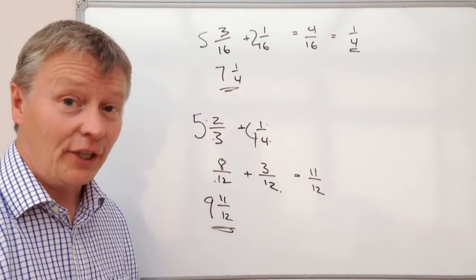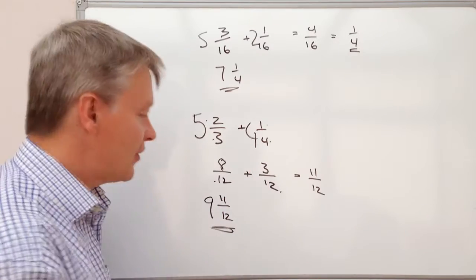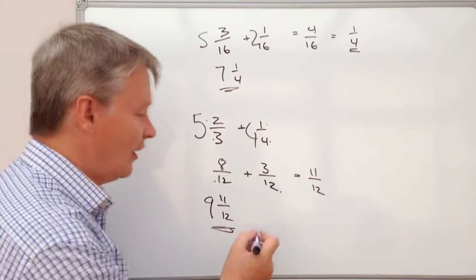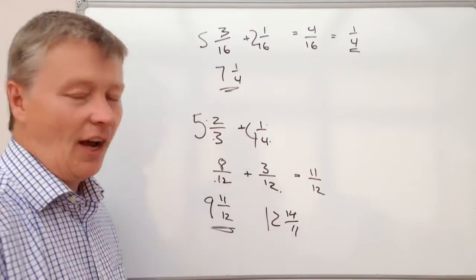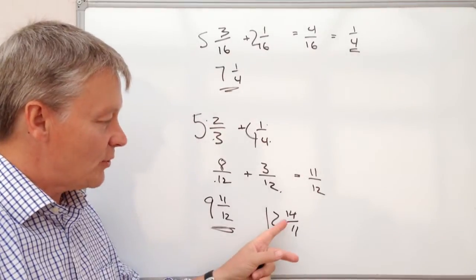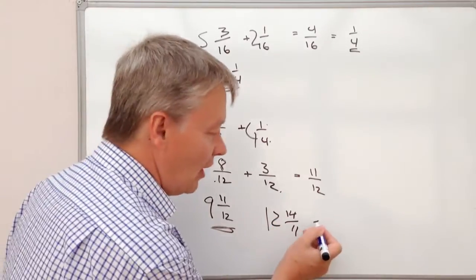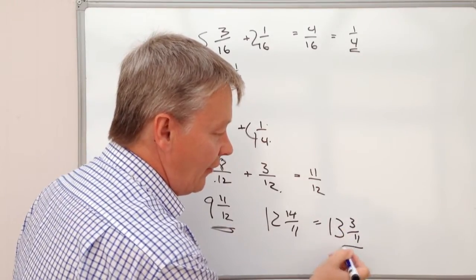The only other thing that you need to remember is occasionally you might use this type of method and you'll end up with an answer like 12 and 14/11. Well that just needs a bit of tidying up and what we do is convert some of those 11s into a whole number and that becomes 13 and 3/11.